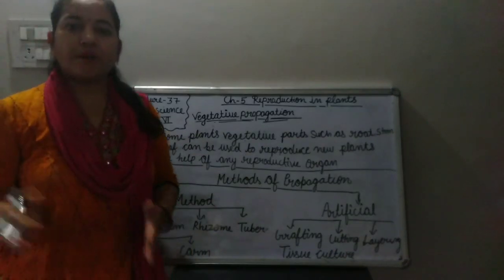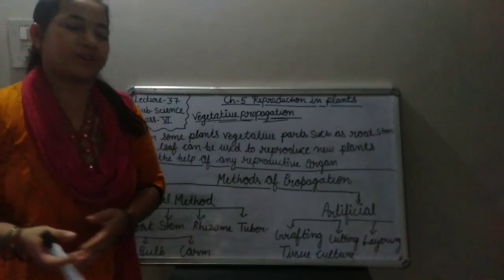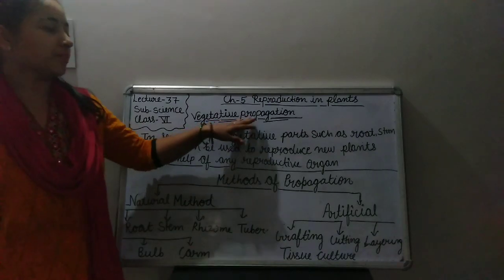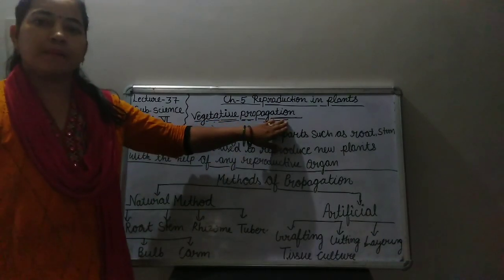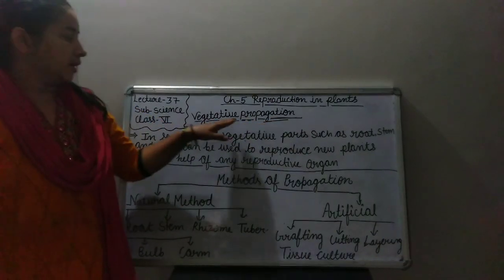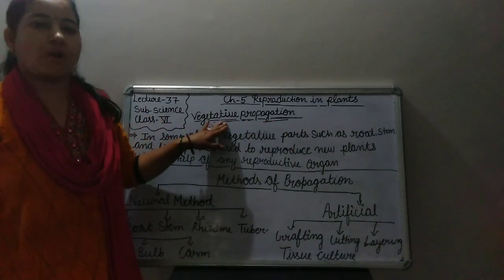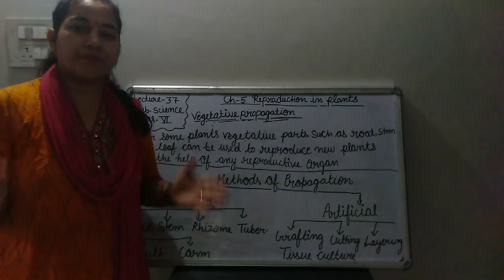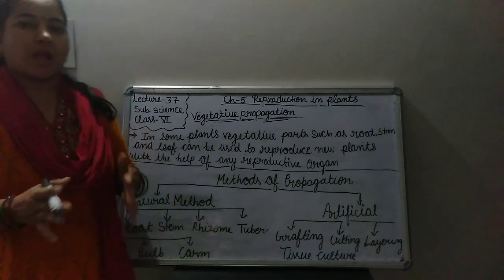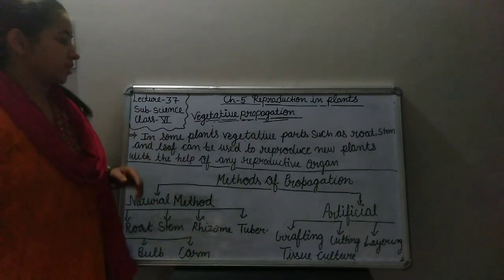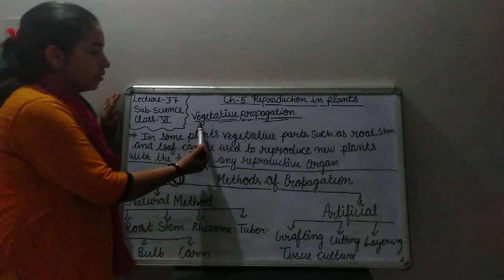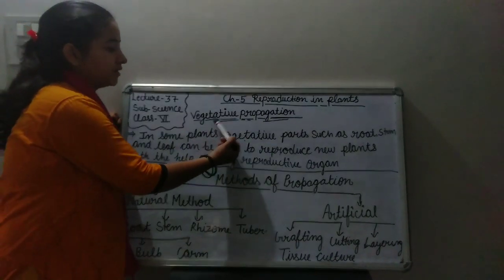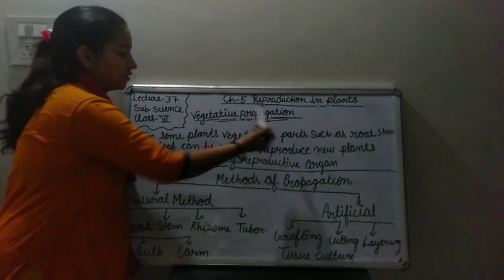Vegetative propagation is a part of asexual reproduction. In our previous classes we have already discussed what is the means of reproduction and how many types of reproduction. So today in this lecture we will learn about vegetative propagation.